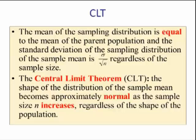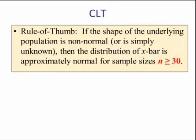What this means is any population — no matter what shape, skew left, skew right, bell shape, or uniform — the distribution of the sample means coming from that population will become normal as the sample size increases. How big does n have to be? The rule of thumb is for sample sizes of 30 or more, the distribution of X-bar will become approximately normal.